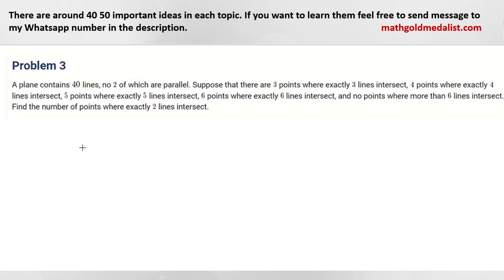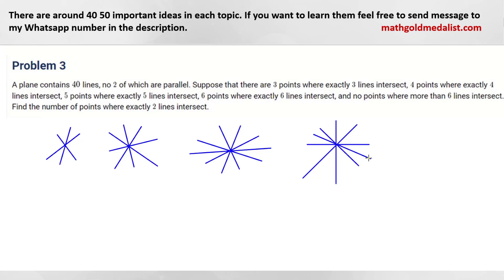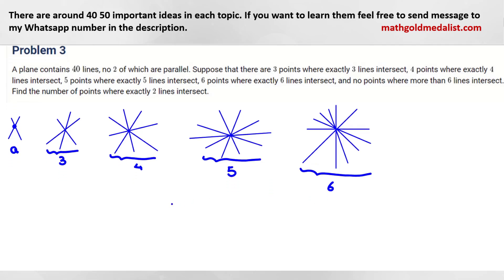If we draw, we have three of this type, four of this type — one, two, three, four — five of this type, six of this type — one, two, three, four, five, six. So how many of these types are there? Suppose we have 'a' from the two-line type, three from the three-line type, four from the four-line type, five, and six.